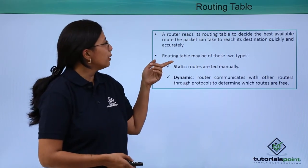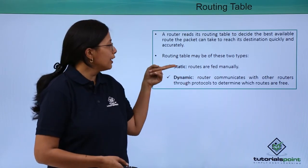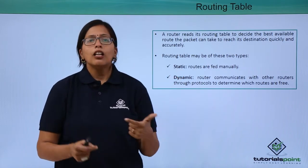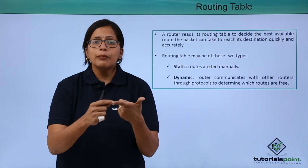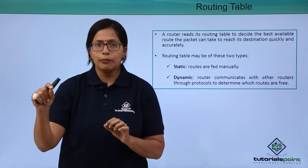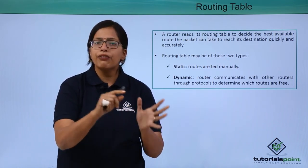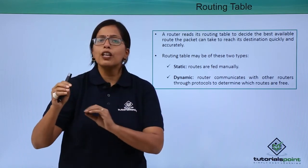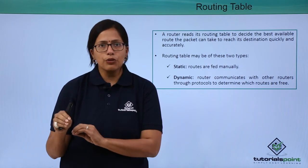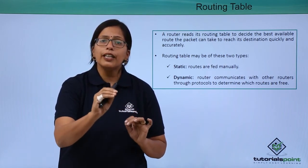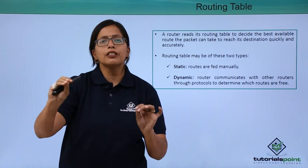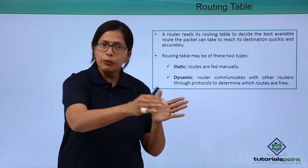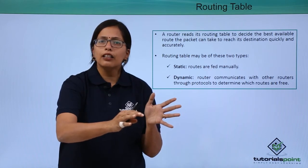The routing table is used to send the data packets and can be of two types: static and dynamic. Static means that the routes are pre-determined. If there are five systems on a computer network, all five systems will have an address associated with them. The static routing table will have all the permutation combinations possible among those five systems, and it will be fed manually into the static routing table.